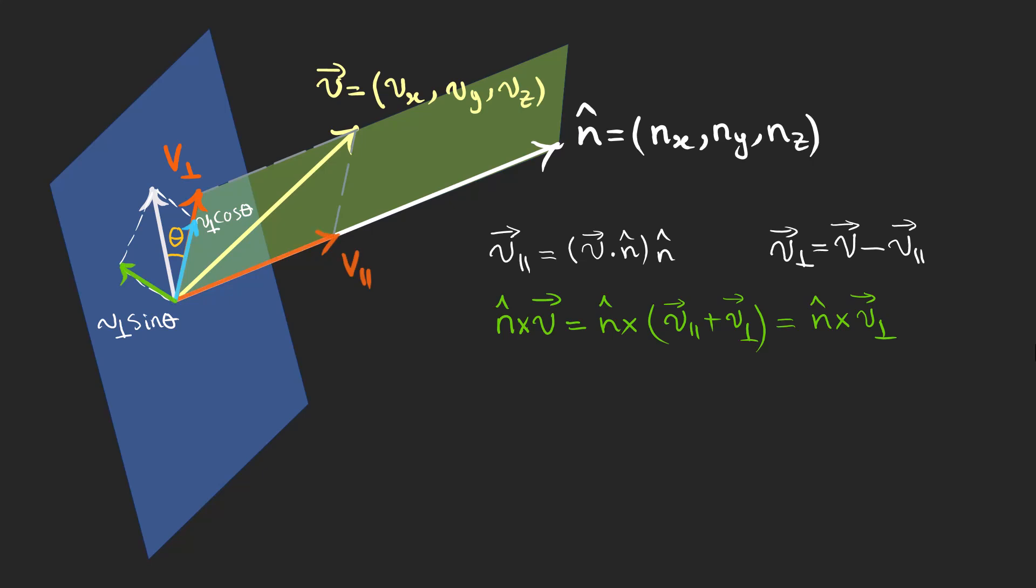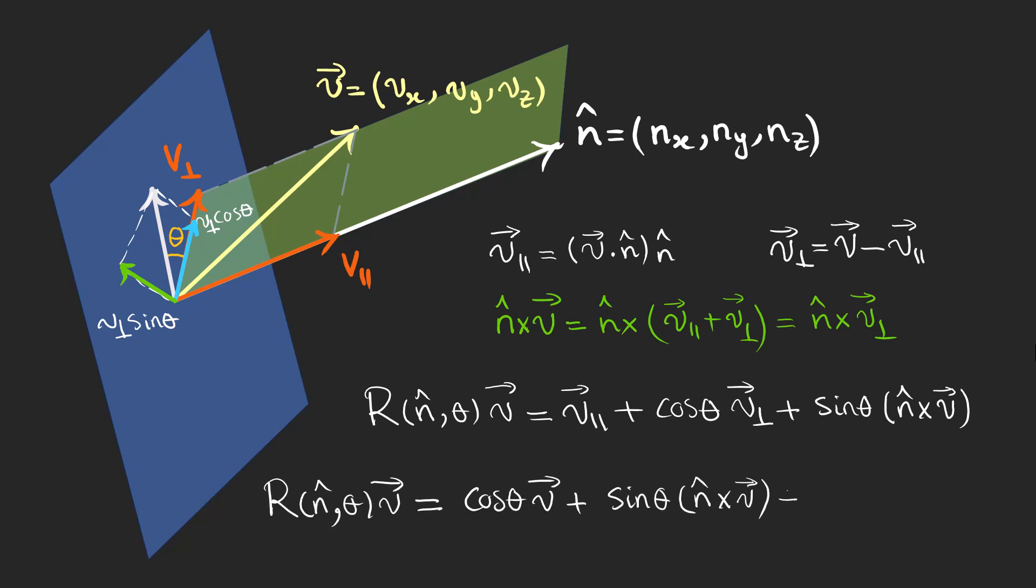The parallel component of v doesn't contribute to this because it is parallel to n and the cross product is 0. So by adding these three vectors, we can find an expression for the rotation about the n-axis by angle theta. Now by using these two expressions, we can find the effect of rotation on the vector v based on solely angle theta and the unit vector n.